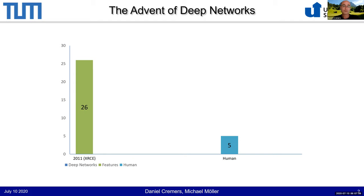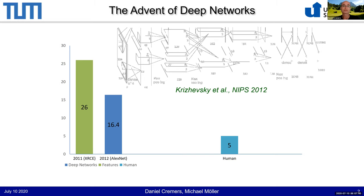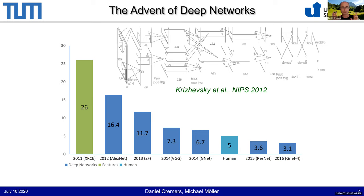In 2011, people were struggling and didn't know how to improve performance or bridge that gap between human and machine. Then something rather unexpected happened: Alex Krzyzewski and collaborators proposed a deep network architecture to process images with layered convolutions and nonlinearities. From one year to the other, they managed to dramatically reduce the error on this big dataset from 26 to only 16.5. In the wake of this work, people further refined network architectures, types of layers, and number of layers — things got significantly deeper, all the way through 2016.